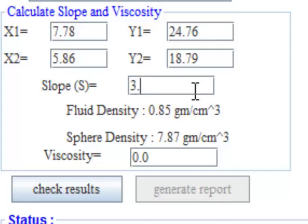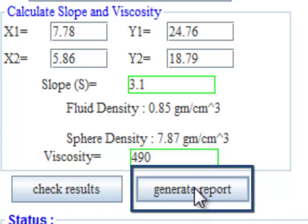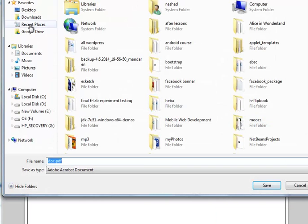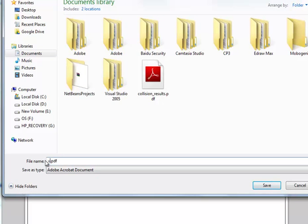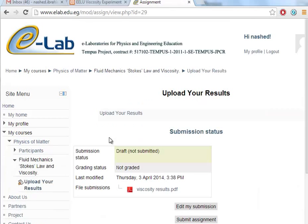Put two points on the line which you drew. Now calculate the slope. Click the Generate Report button to export your result. Save the PDF results file on your own machine. Click on Upload your results link.